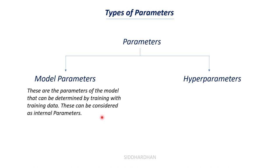When a linear regression model tries to learn from data, it starts with a random slope value and random intercept value. The model's goal is to find the proper values for slope and intercept so it can make accurate predictions. We sometimes call this slope the weight w and intercept the bias b. Hence these two are examples of model parameters — all models have a set of parameters associated with them.